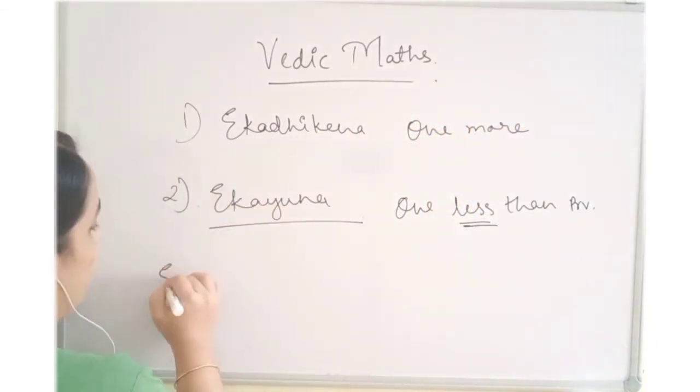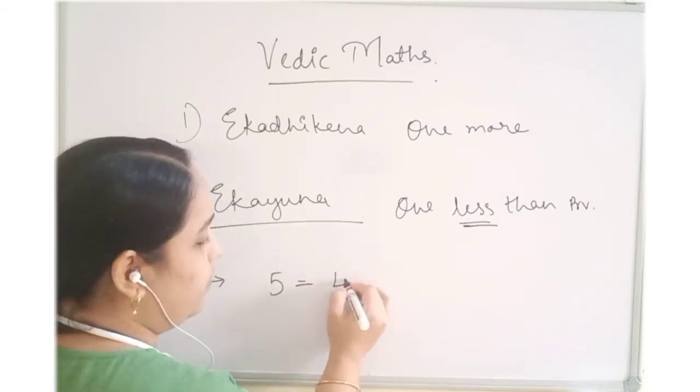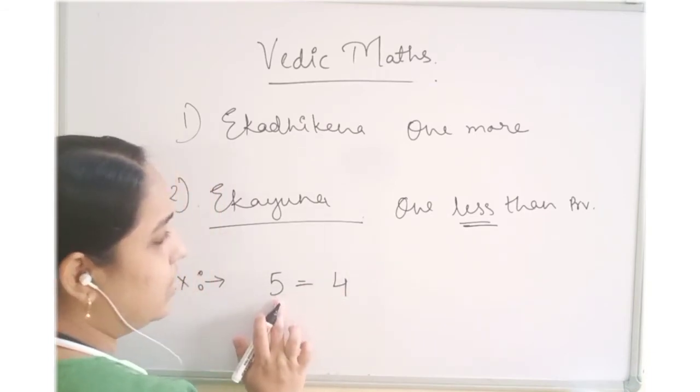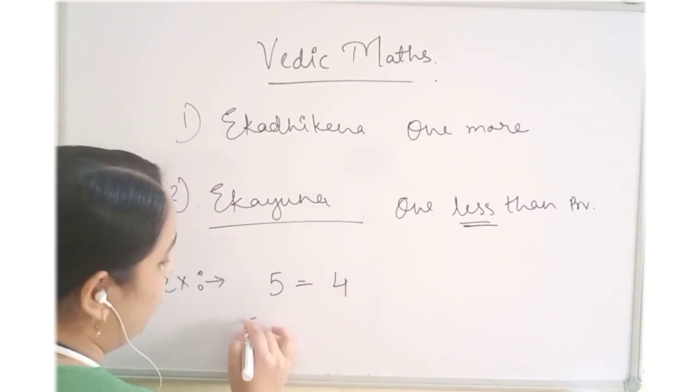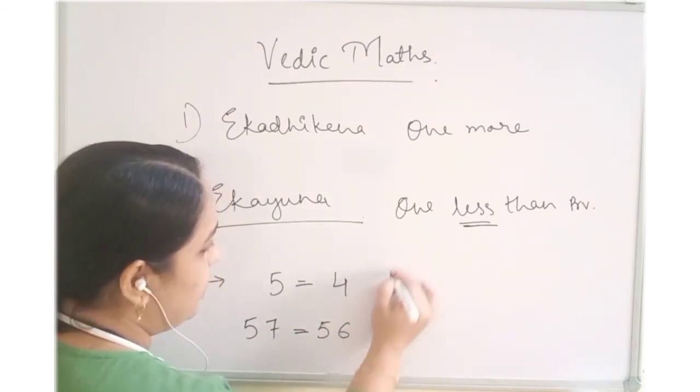So same way, we will understand few examples for Ikayuna. 5, it will be 4. One less than this number will be 4. 57, Ikayuna of 57 is 56.